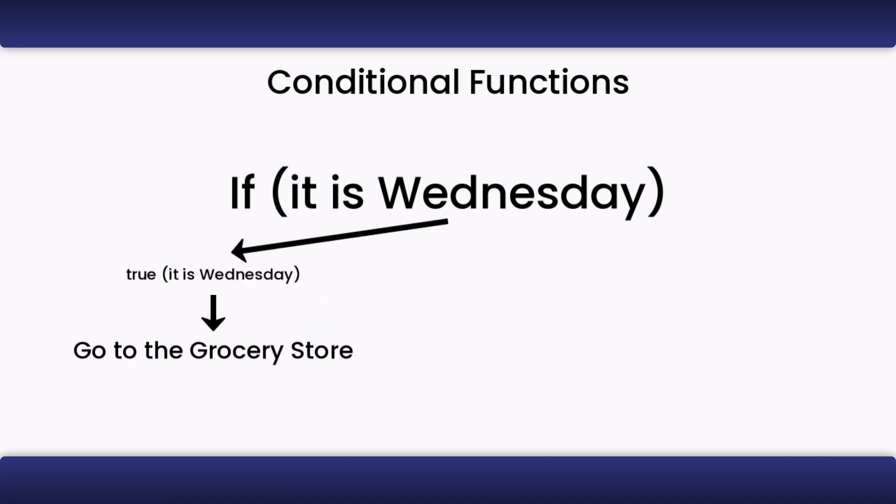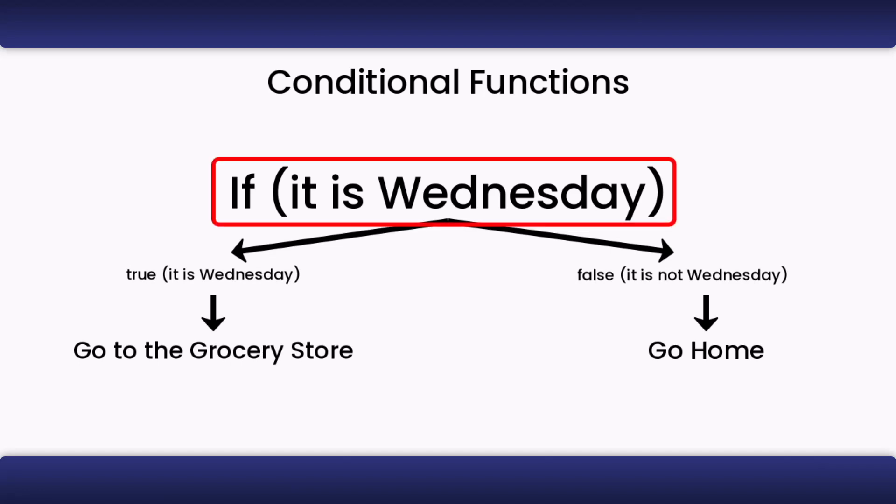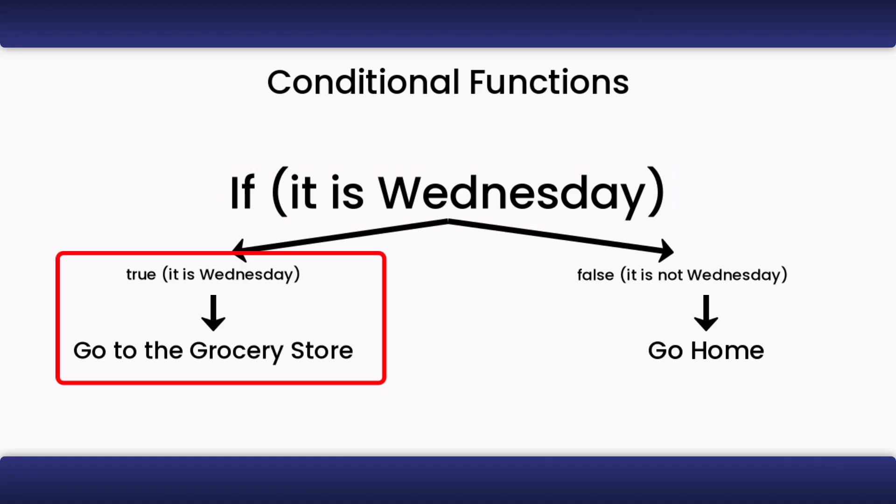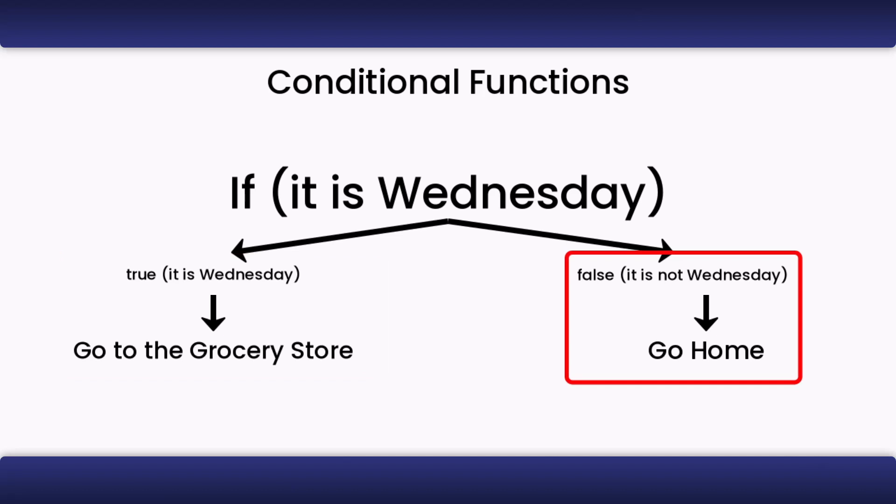In the most basic terms, an if condition will change its output to one of two things depending on the condition. A real life example may be something like, if it is Wednesday, go to the grocery store. Otherwise, go home. The if it is Wednesday is our condition. Going to the grocery store is our true option, and going home is our false option.